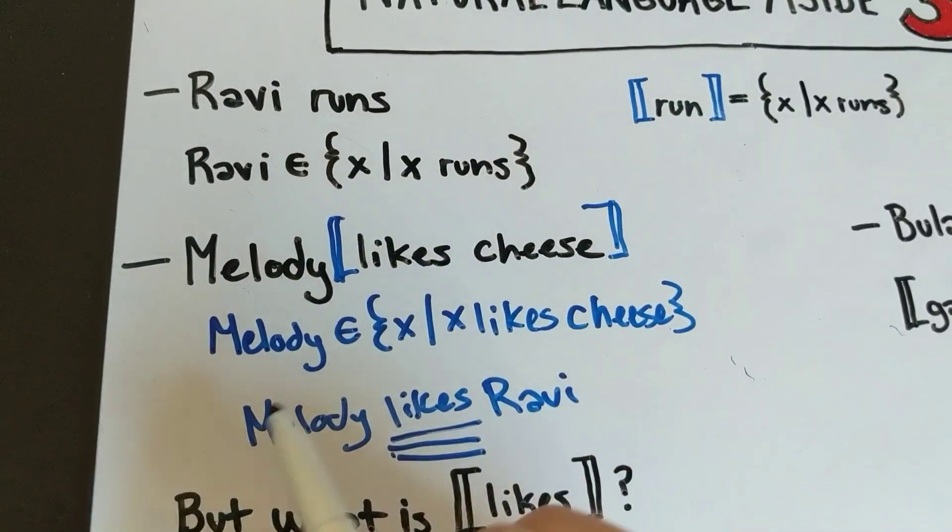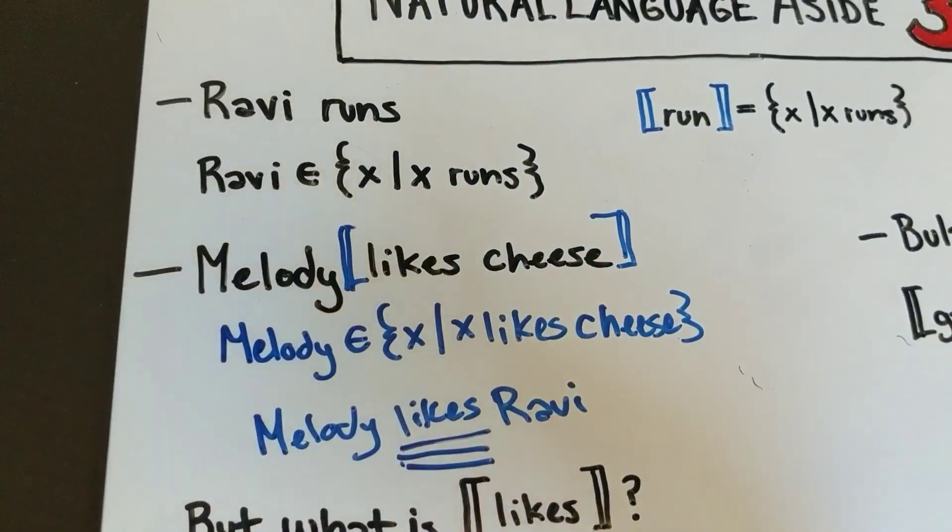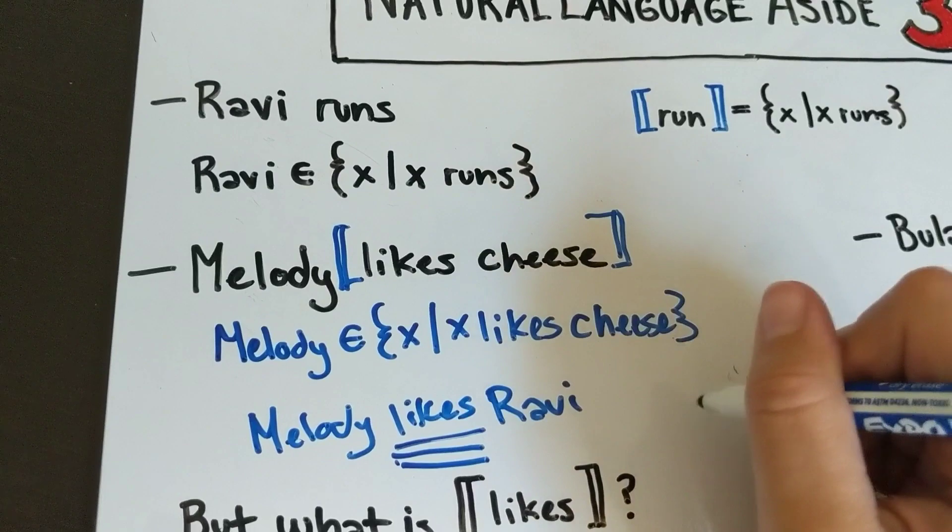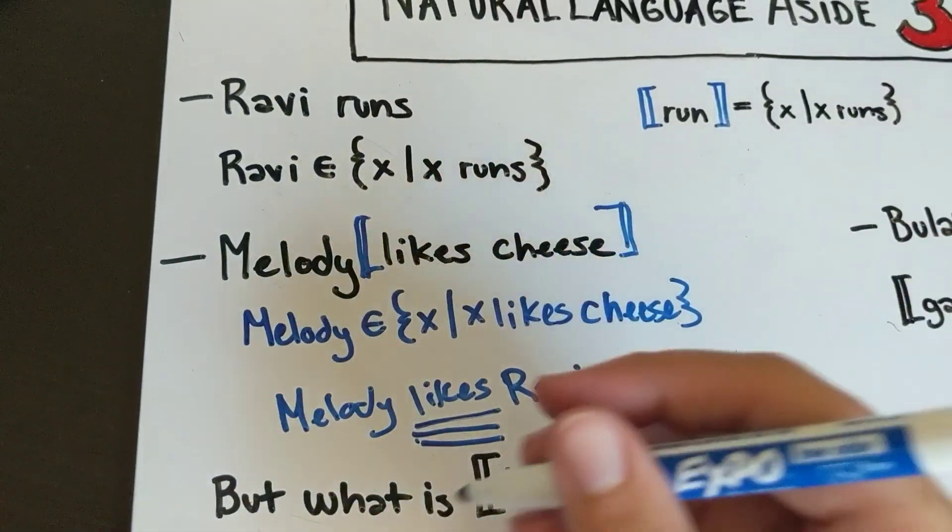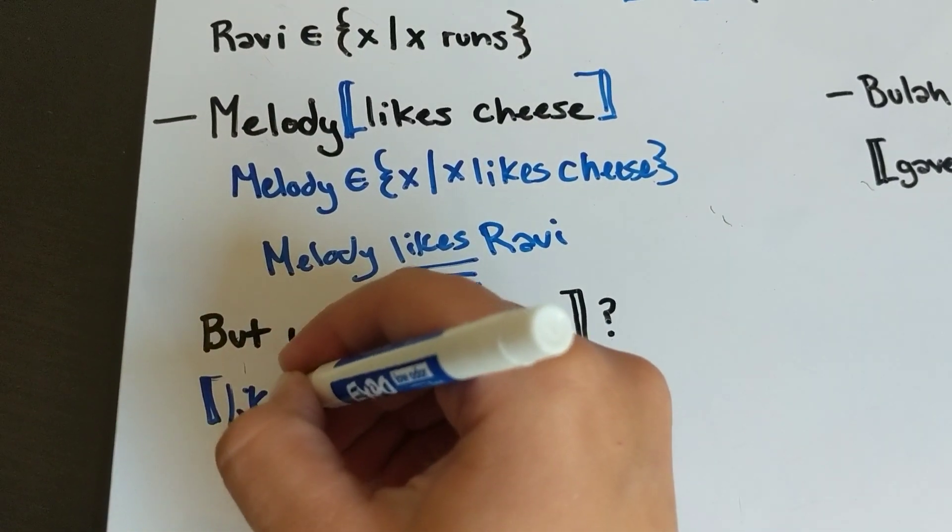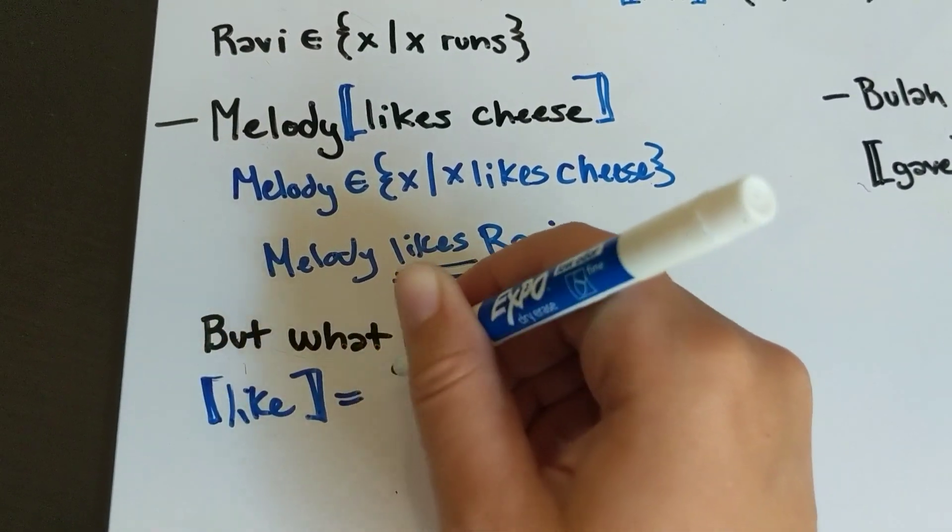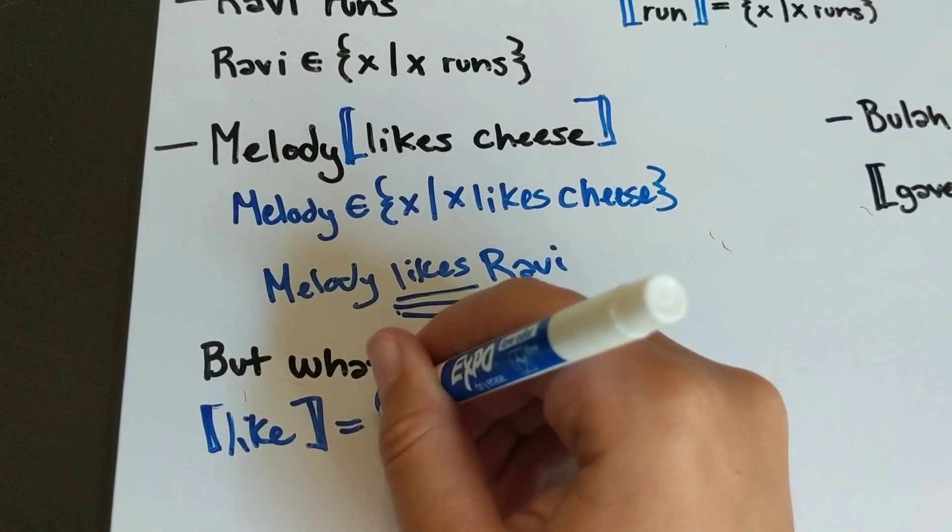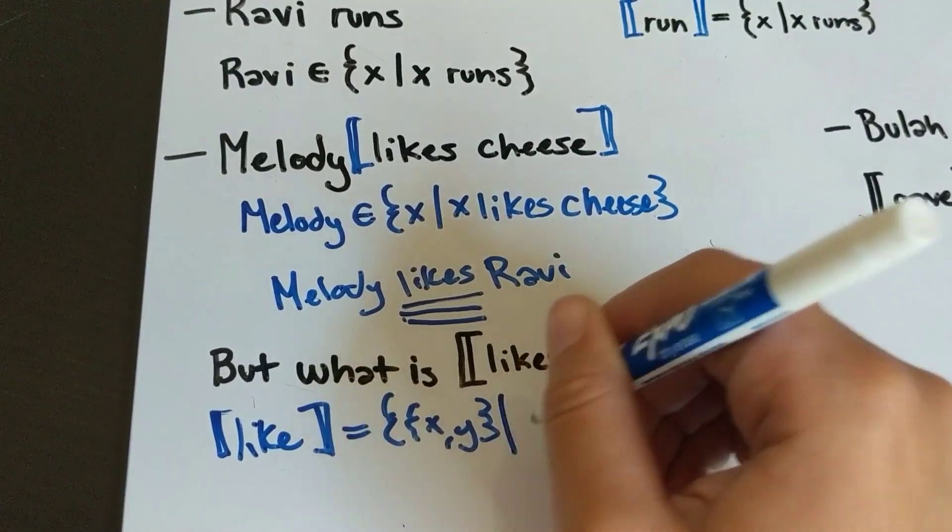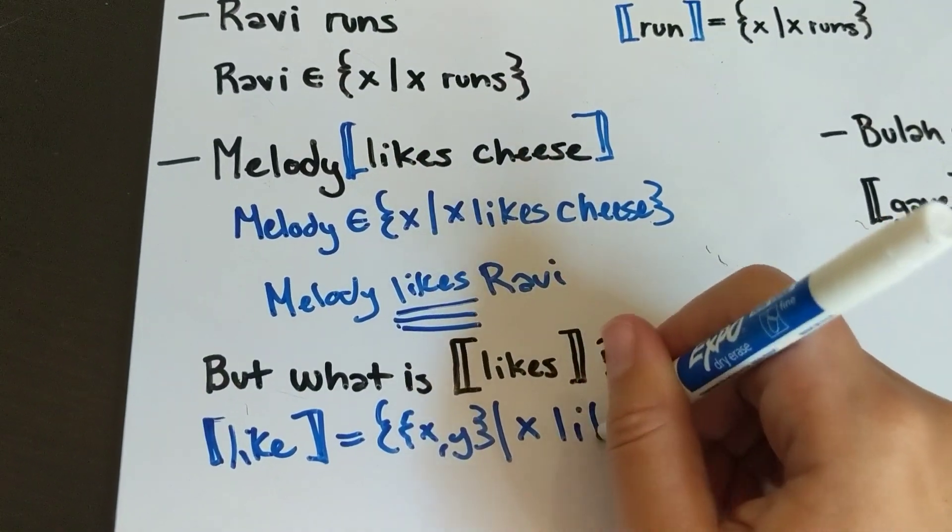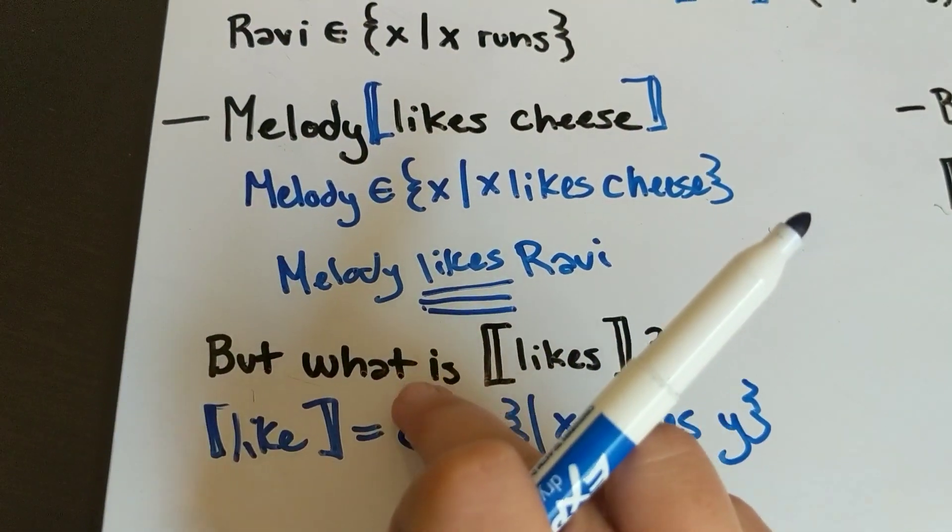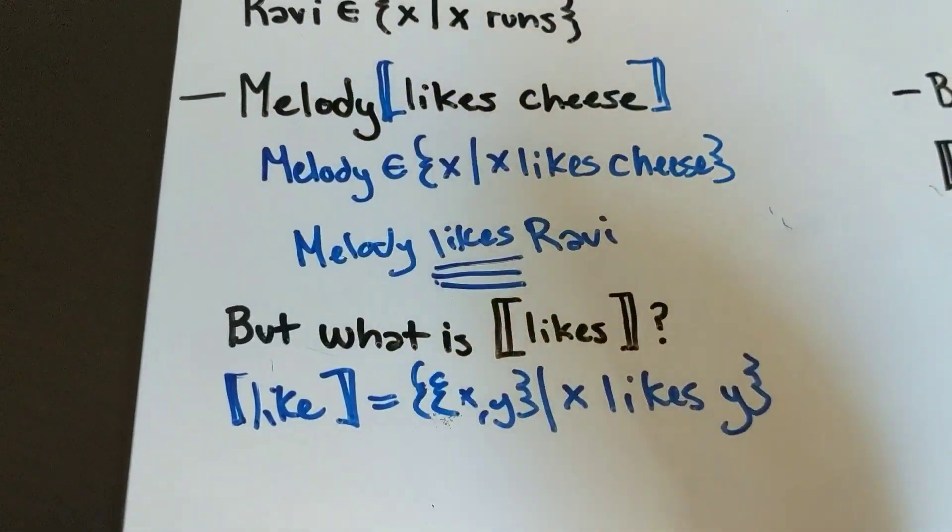If we look at this, essentially what we're doing is creating pairs of things that go into a liking relationship with each other. We might say that the meaning of 'like' is a set of pairs of things x, y such that x likes y. If we're just using our regular set expressions, the problem with this...